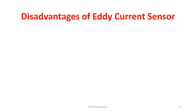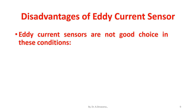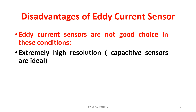Eddy current sensors are not a good choice in these conditions: first, when extremely high resolution is needed — capacitive sensors are ideal in that situation; second, when a large gap between sensor and target is required — optical and laser sensors are better in that situation.